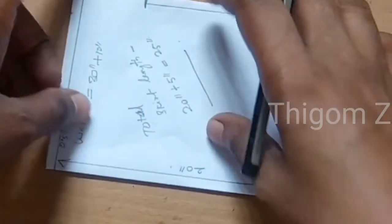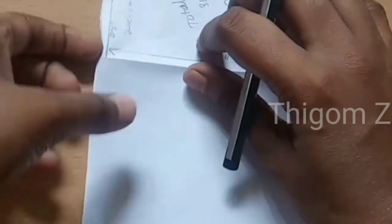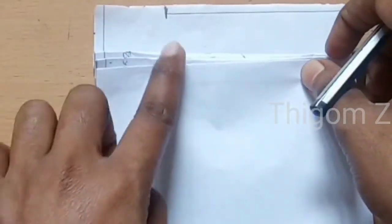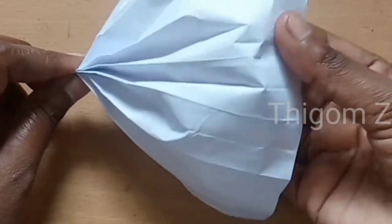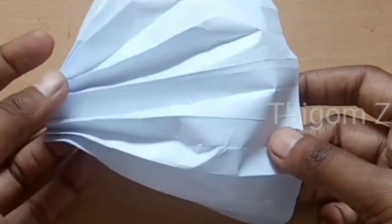So my waist is 30 plus I am adding 10 inches for gathers. So it will look like this - gathers. In the paper you can see the gathers like this.